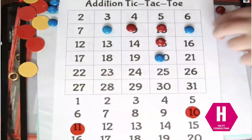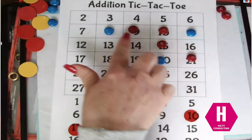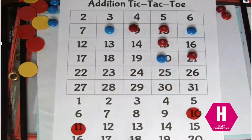Ten plus eleven equals twenty-one and he wins. So he has three in a row diagonally here. Ten plus eleven equals twenty-one. That's how you play addition tic-tac-toe.